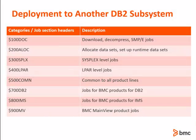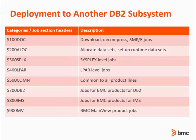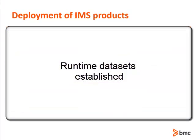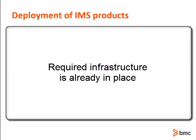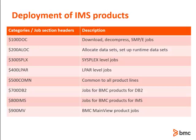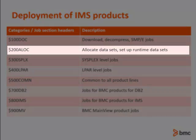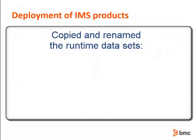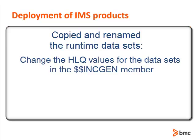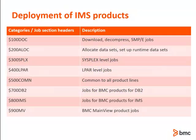Now I need to run the $700 series jobs referencing the new DB2 subsystem identifier in the $$INC DB2 member. A quick course on MSSID cloning is available to cover deploying to multiple DB2 subsystems. In this scenario, I already have the runtime datasets established and any infrastructure required by the products is already in place. If I ended up recreating the runtime datasets by rerunning the $200 series of jobs, then I would need to review the variables in the $$INC IMS member and then run the $800 series of jobs in order. If I copied and renamed the runtime datasets, then I would only need to change the HLQ values for the datasets in the $$INC GEN member and then run the $845 COPY job. The $845 COPY job file-tailors the product CLists and copies them to the user live dataset. If I am sharing the runtime libraries, no $800 series jobs need to be executed to deploy to another environment.